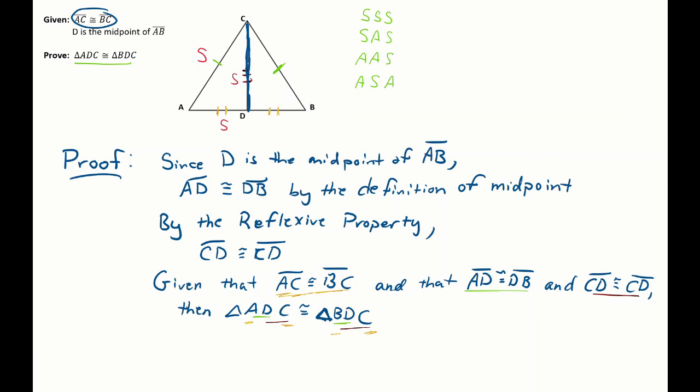So given that those three sides are congruent, then the triangles are congruent by side side side. Back it up, and you're proof. Okay, so there we proved the two triangles congruent by side side side.